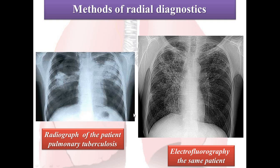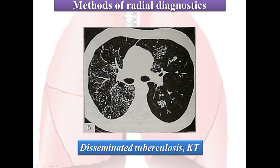X-ray film allows you to see changes in the lungs directly. Here you can see electrofluorography of the same patient, and then we have radiological diagnostic methods — CT, computed tomography — which is the most informative method for tuberculosis.